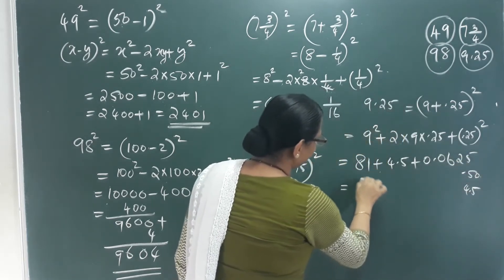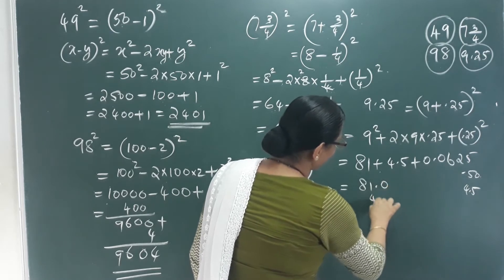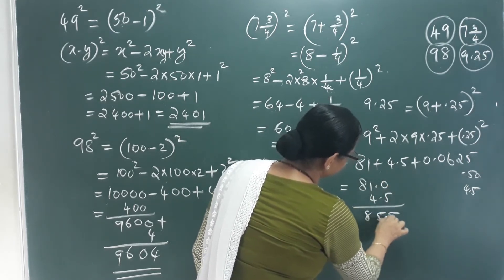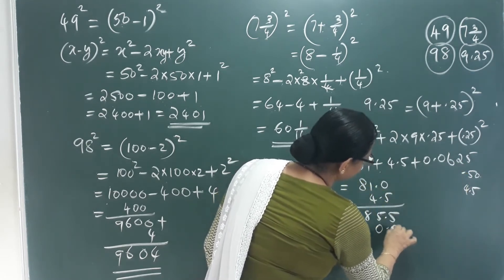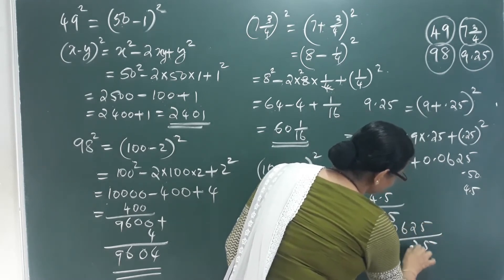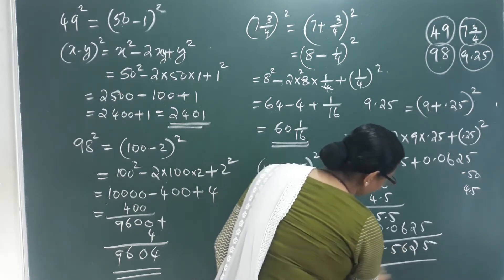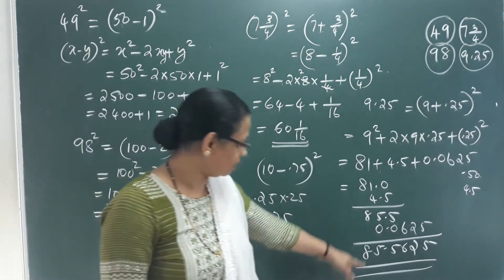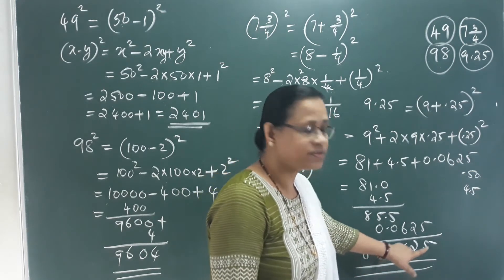We add 0.0625. So 81 plus 4.5 plus 0.0625. Multiplying through: 5, 2, 6, 5. The answer is 85.5625. So 9.25 squared equals 85.5625.